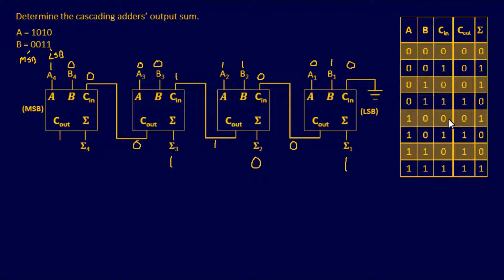So I have a carry bit of 0, and then a sum of 1. This will give us a total sum of 1, 1, 0, 1.